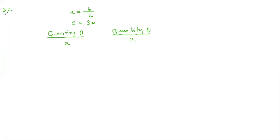Let's discuss question number 37. In question 37, we have two conditions, a quantity A and a quantity B. The two conditions are: A equals B divided by 2, and C equals 3B.